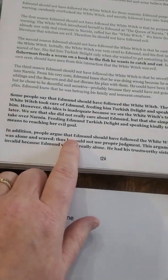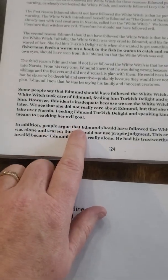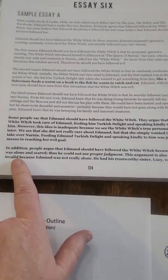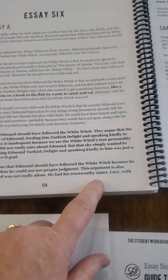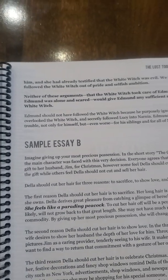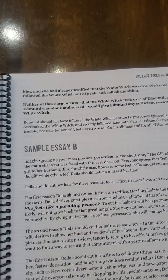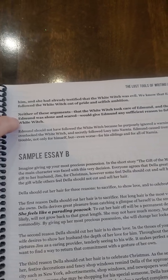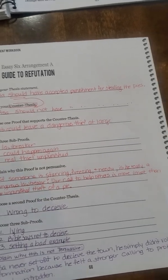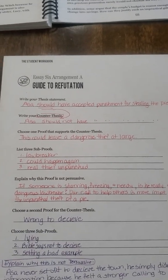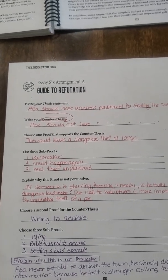Let's look at the next part. In addition — here's the second counter-proof. People argue against you: 'Edmund should have followed the White Witch because he was alone and scared.' Then they explain why that's not valid, and end with: 'He had his trustworthy sister with him, and he had already testified the White Witch was evil. We know Edmund followed the White Witch out of pride and selfish ambition.' Then the summary: 'Neither of these arguments — that the White Witch took care of Edmund and that Edmund was alone and scared — would give Edmund any sufficient reason to follow the White Witch.' Similarly: neither 'it could leave a dangerous thief at large' nor 'it's wrong to deceive' offer enough proof to show Asa should not have accepted punishment.